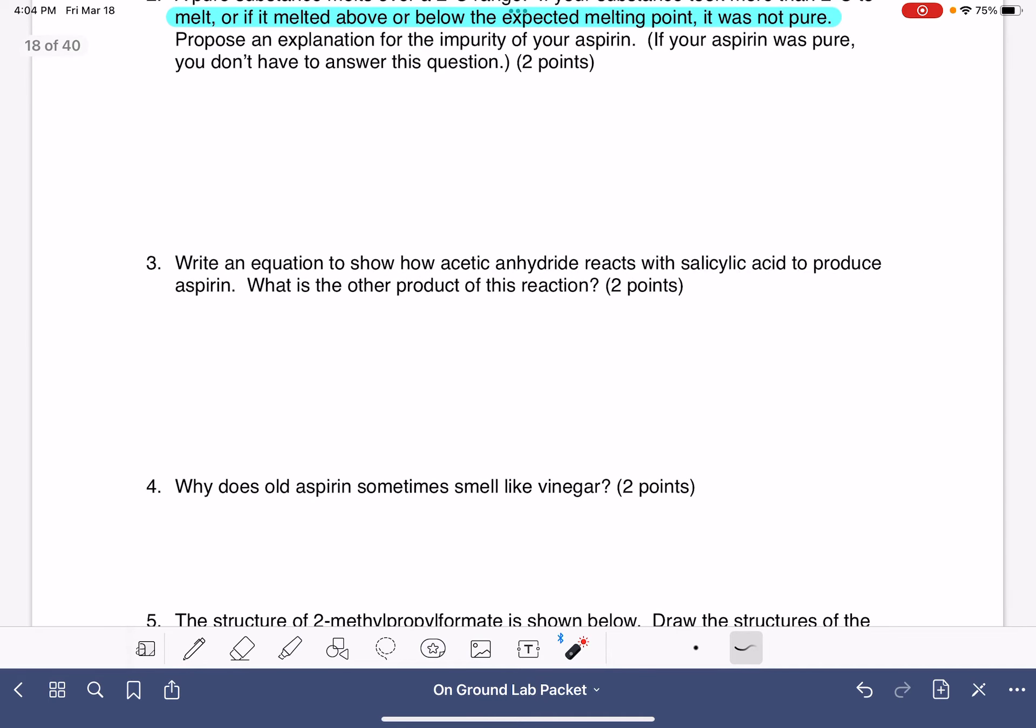Question three, you'll write an equation to show how acetic anhydride reacts with salicylic acid to make aspirin, and identify the other product of this reaction. This problem will be easier to solve if you use the chemical structures rather than a balanced chemical equation.